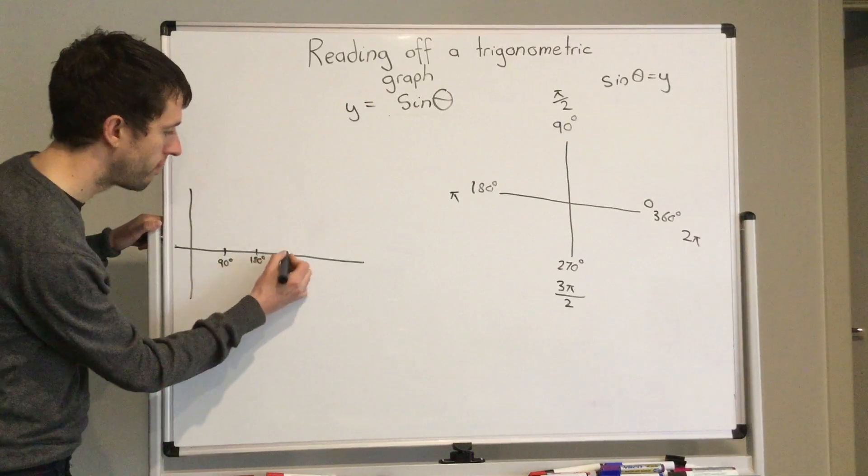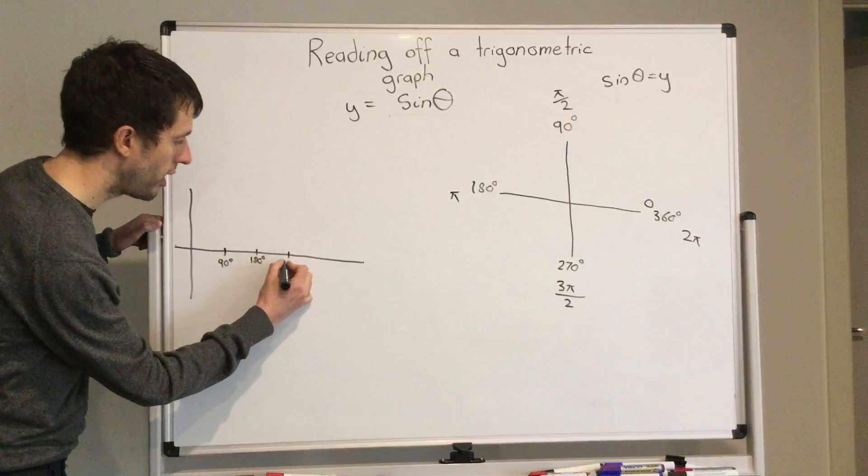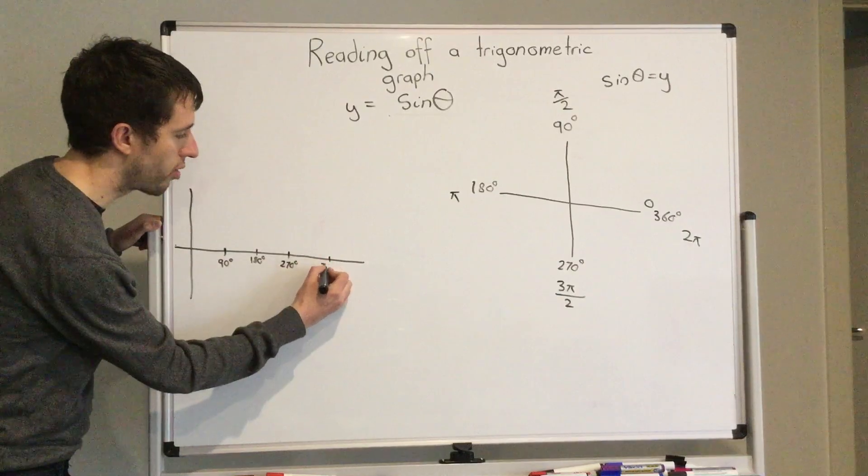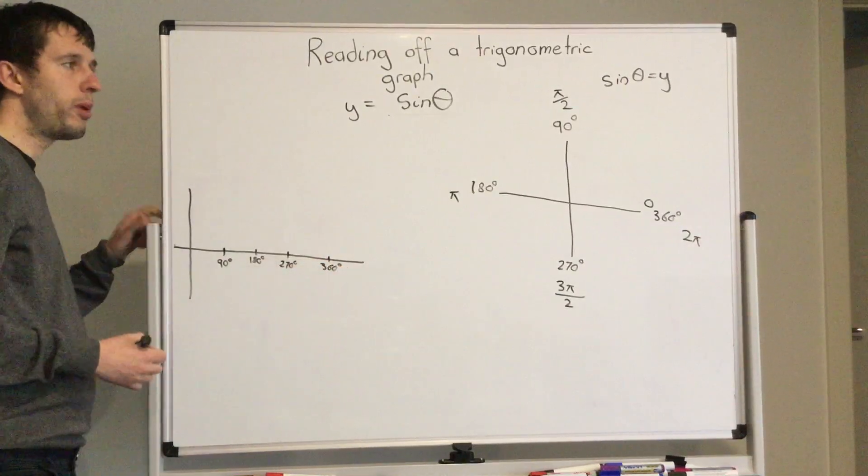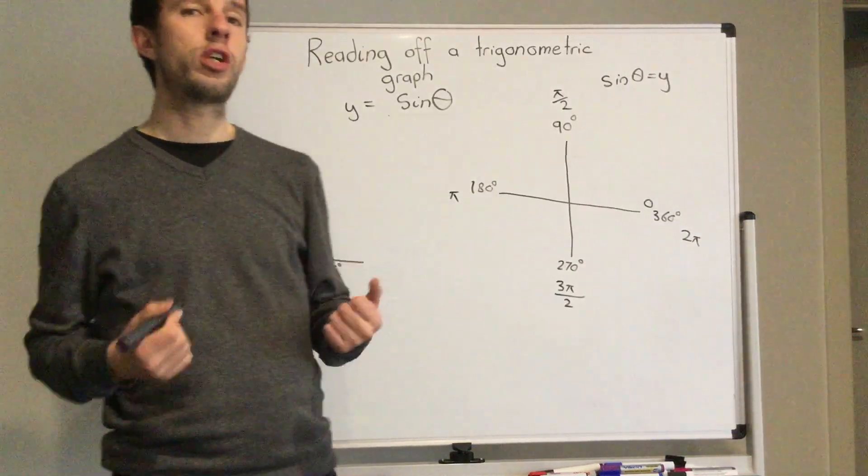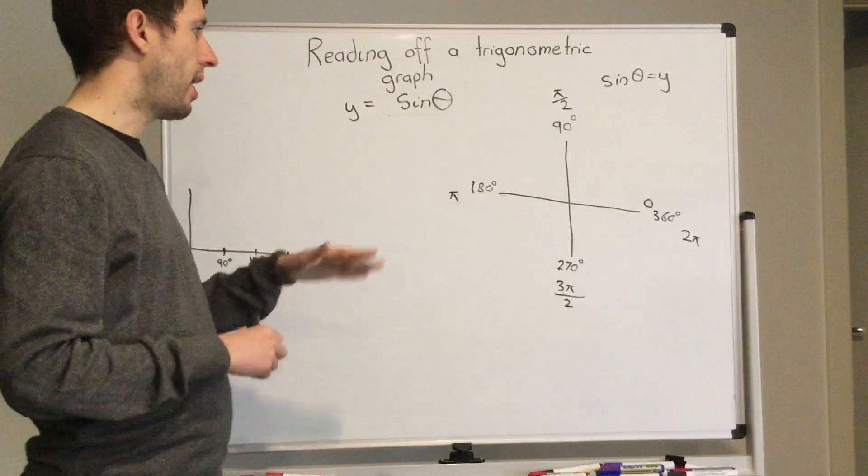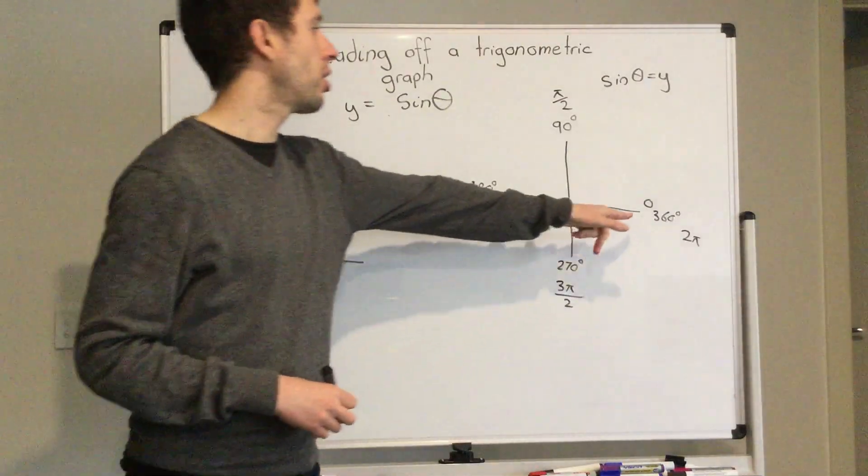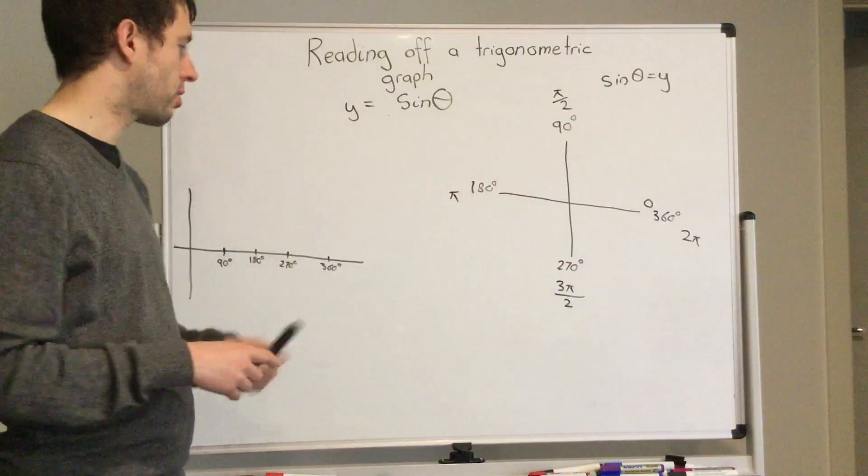Because we haven't changed the period in here, our circle takes 360 degrees to go around.